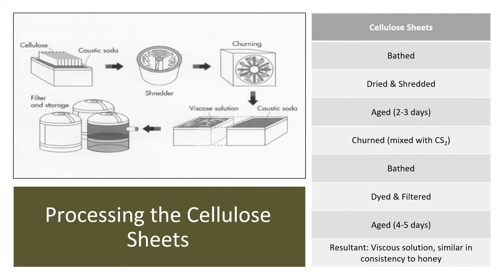After this period, it is mixed with carbon disulfide and churned to make cellulose xanthate, which is again bathed in caustic soda. At this point, dyes are added, the solution is filtered, and aged for another 4–5 days. The resulting solution is viscous and similar in consistency to honey.